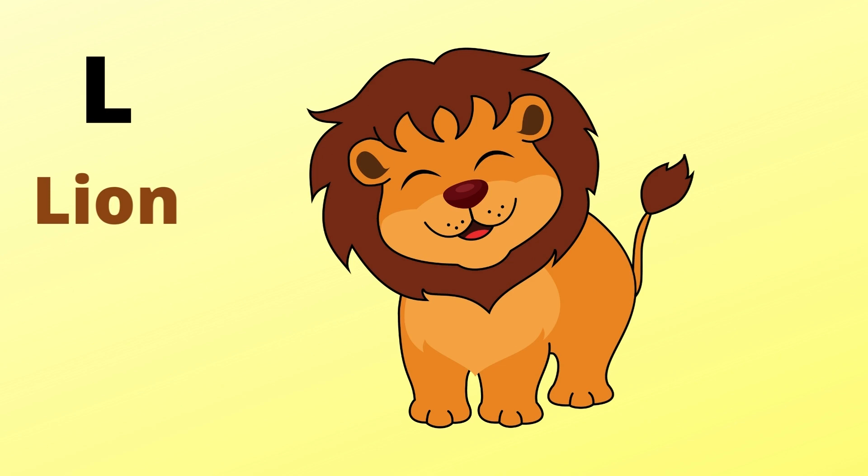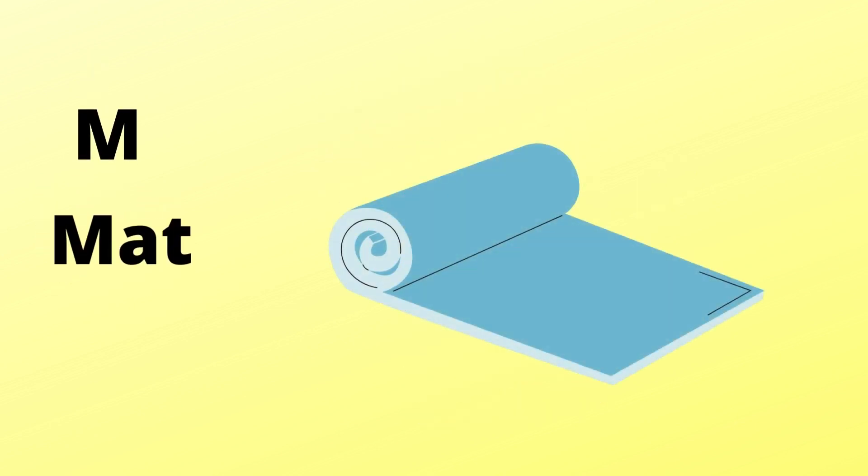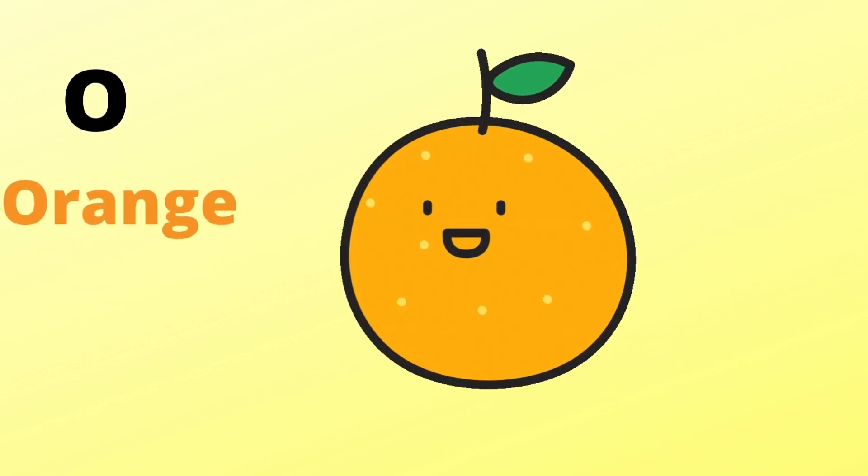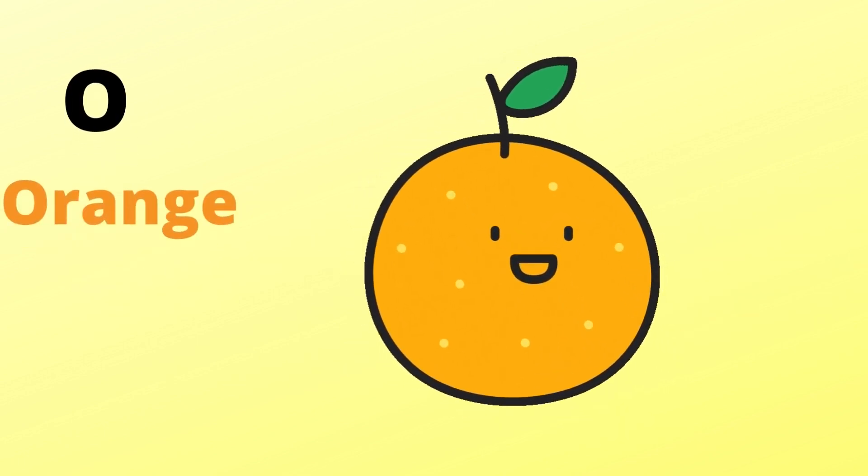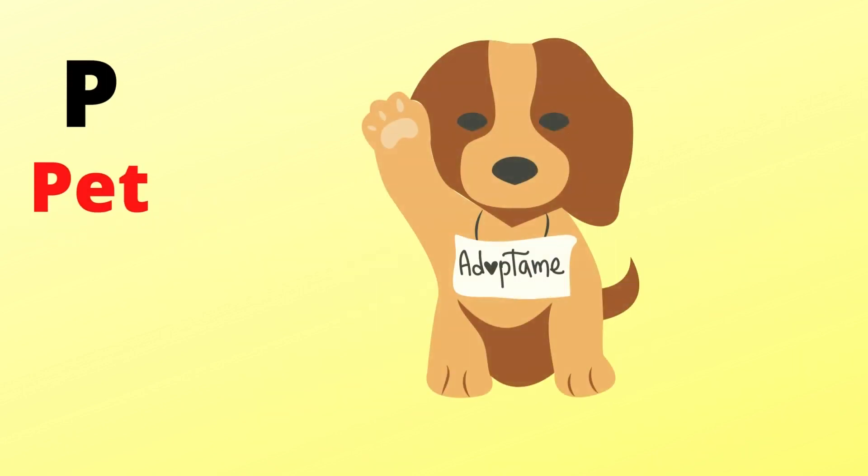M is for mat, m-m-mat. N is for net, n-n-net. O is for orange, o-o-orange. P is for pet, p-p-pet.